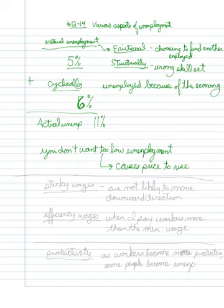Now, we also see that some people become unemployed because wages are sticky. So what do we mean by sticky wages? Sticky wages means that they are not likely to move in a downward direction.